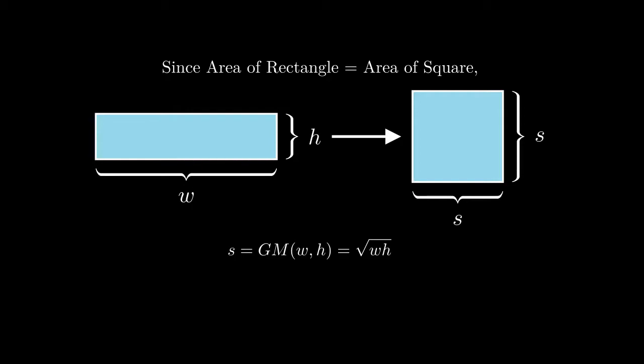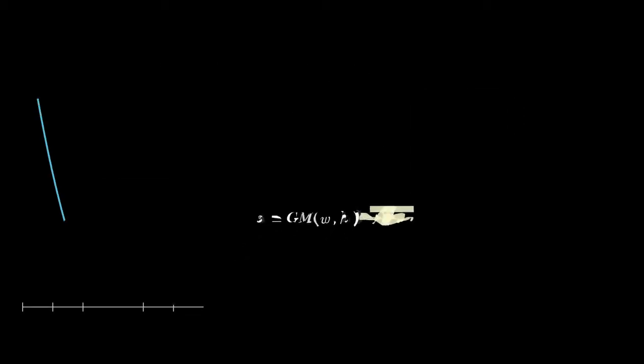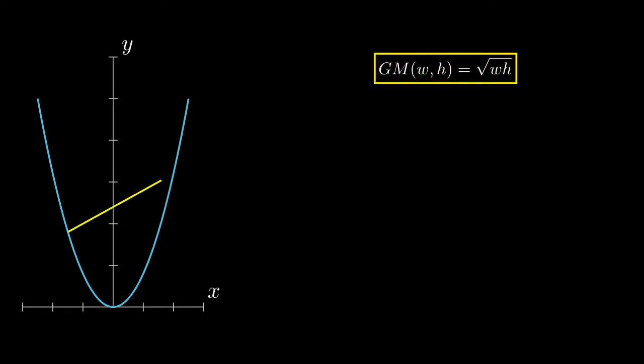Now let's go back and take a look at the parabola example from before. Upon some close observation, you might notice that the y-intercept is actually the geometric mean of the two y-coordinates used to draw the line.